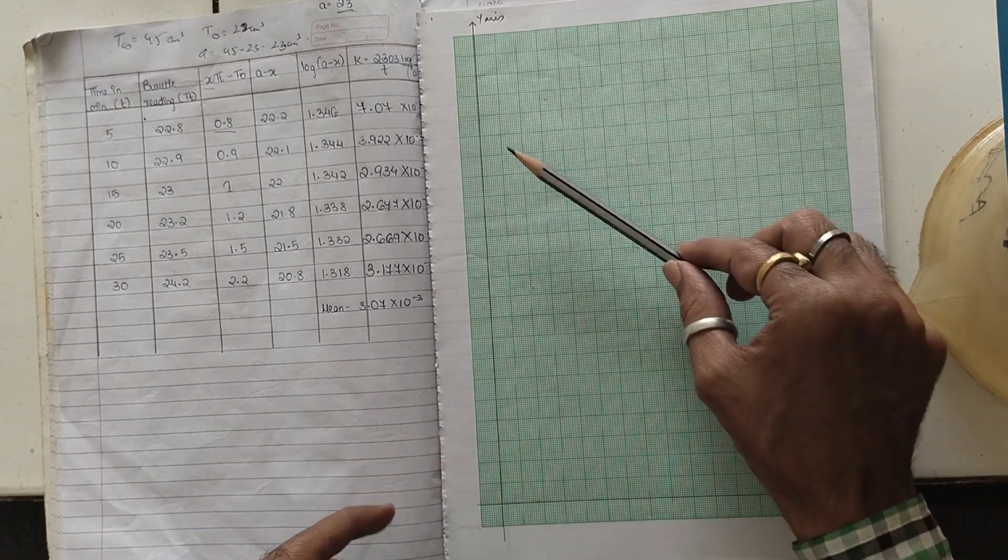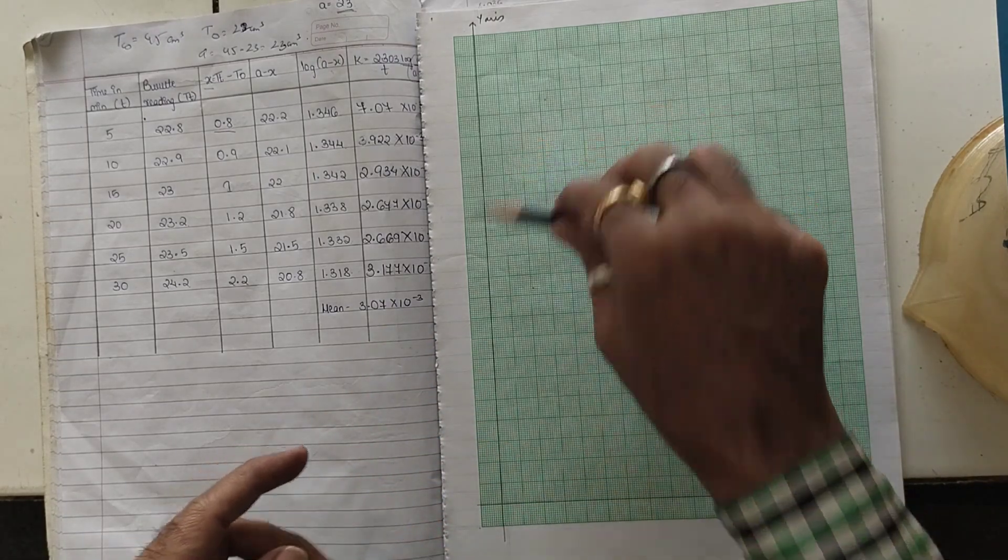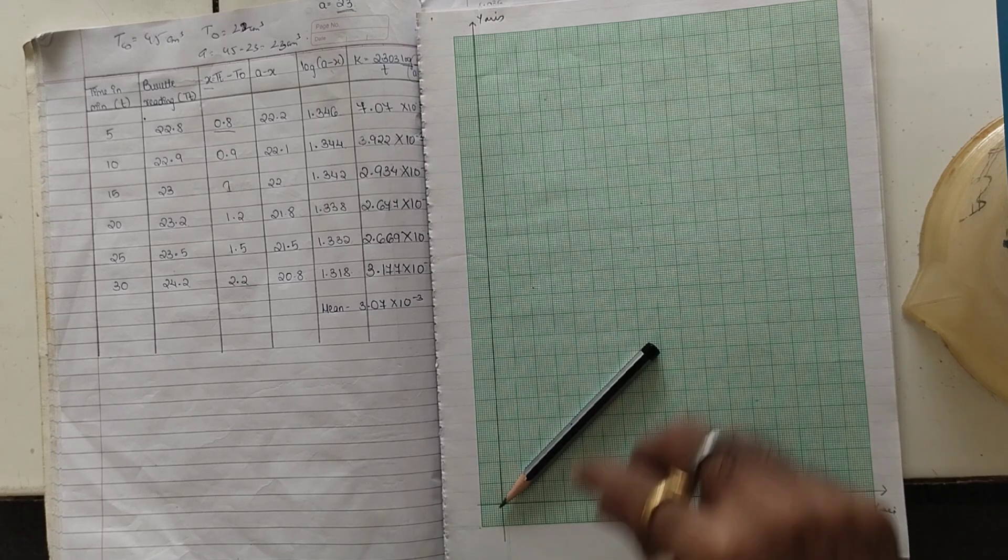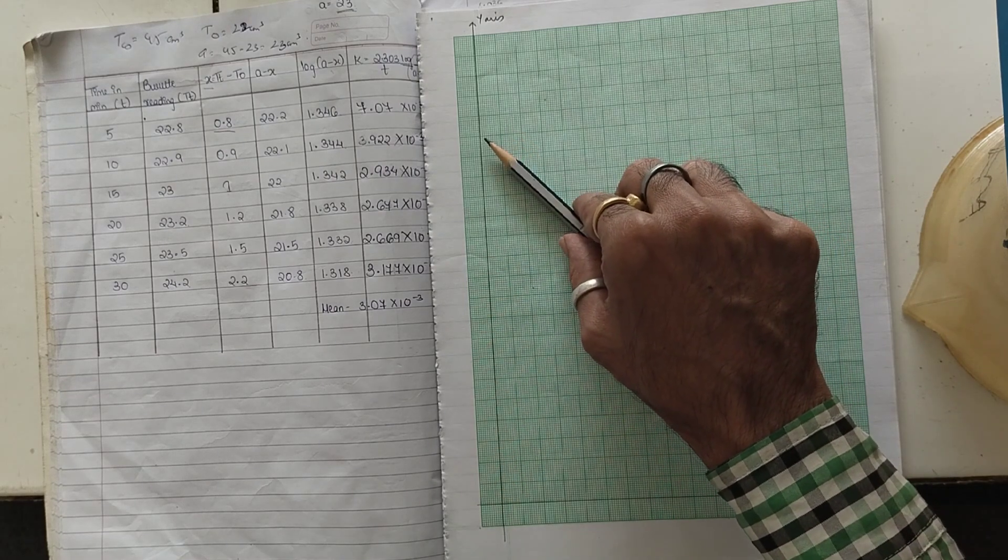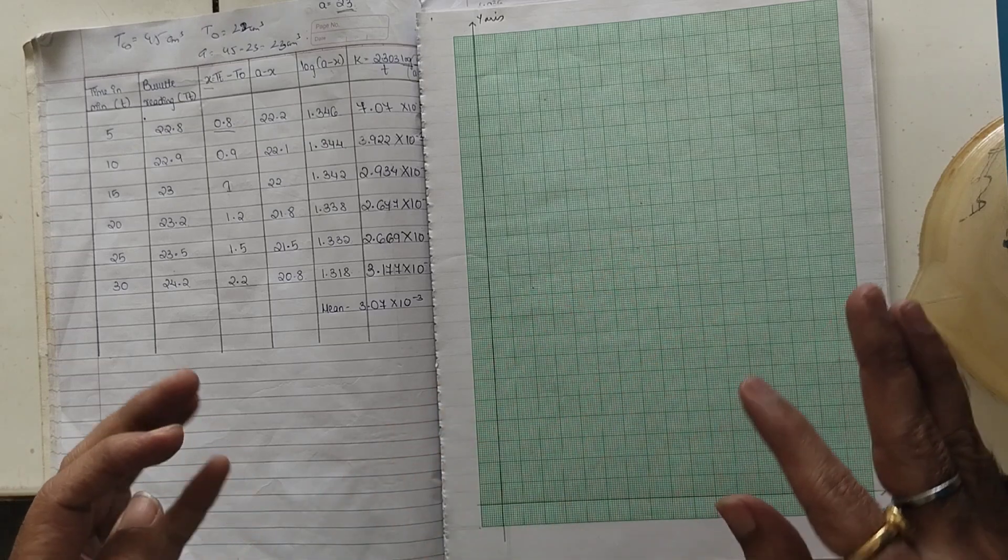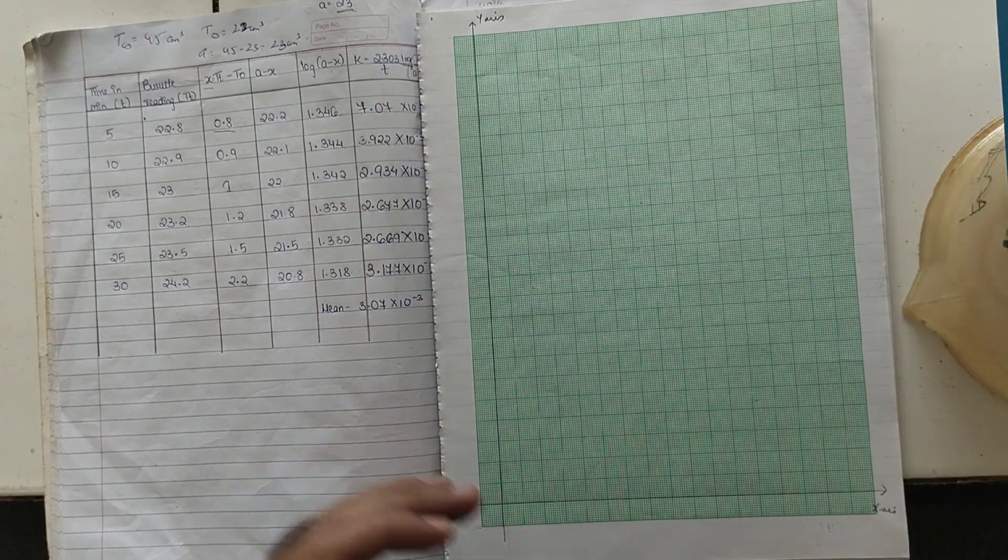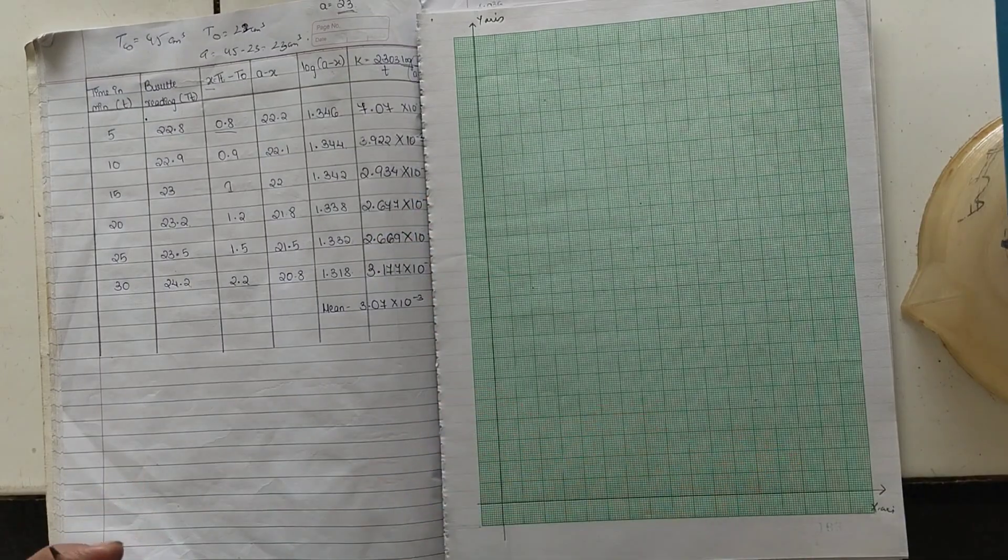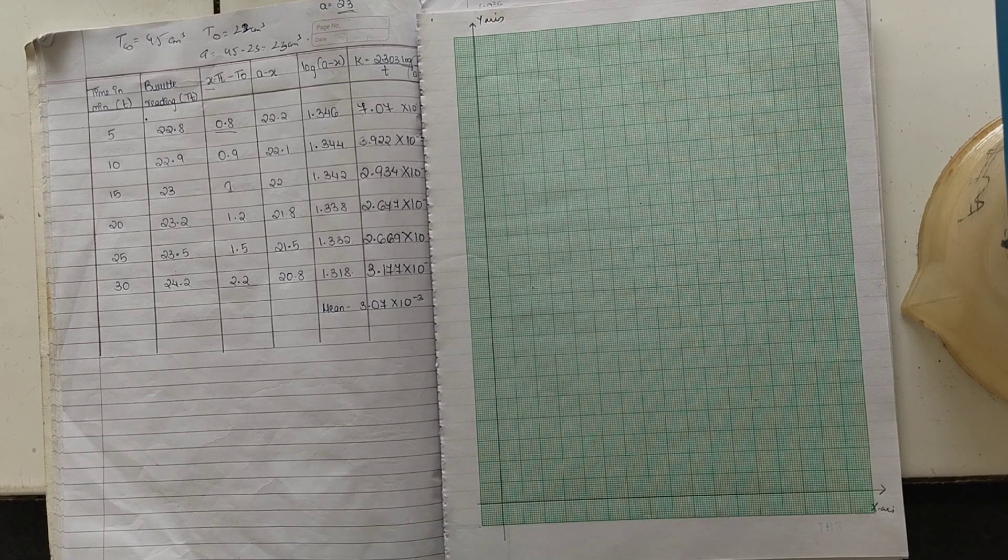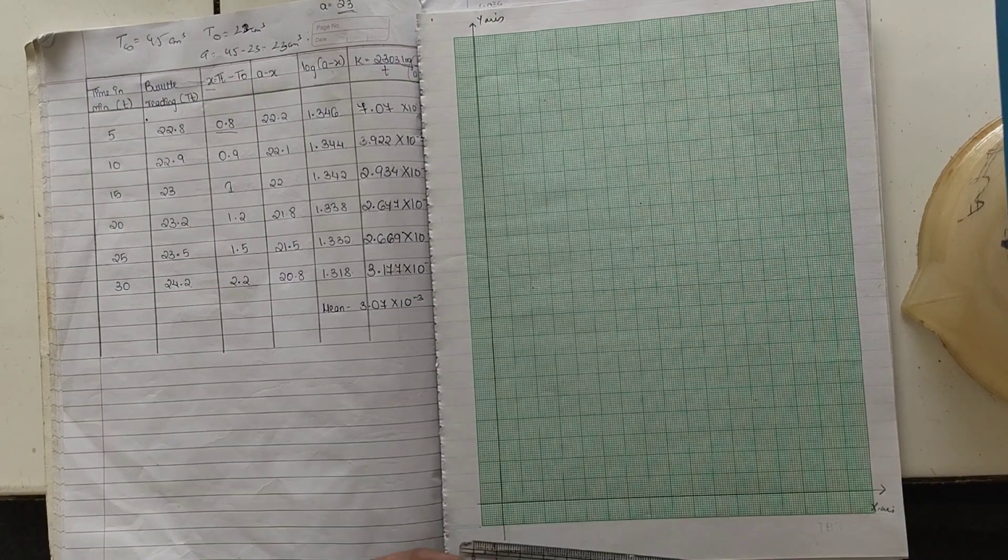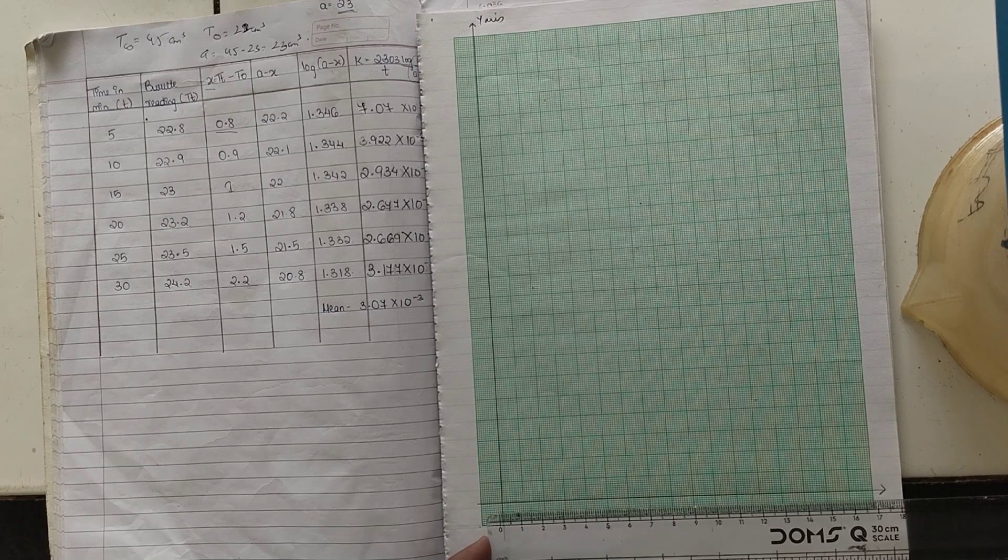We will be getting a line of this shape like this. It is not this way. Okay. So let's look at this.